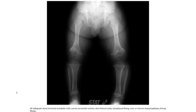Another case of achondroplasia: the AP radiograph shows horizontal acetabular levels, narrow sacroscenic notch, short femoral neck, metaphyseal flaring with a cone or chevron shape of the AP physis, and a long femoral line.